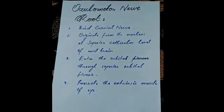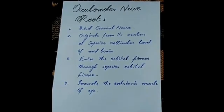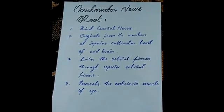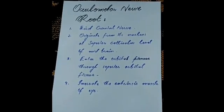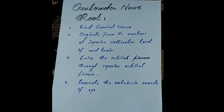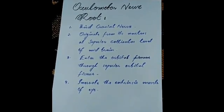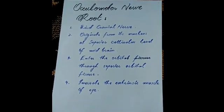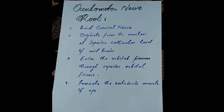The oculomotor nerve is the third cranial nerve. It originates from its nucleus at the superior colliculus level of the midbrain, enters the orbit through the superior orbital fissure, and innervates the extrinsic muscles of the eye.